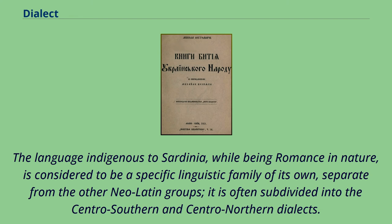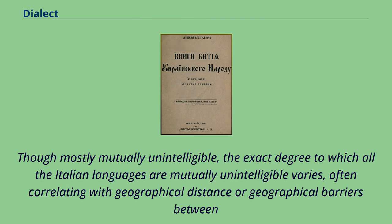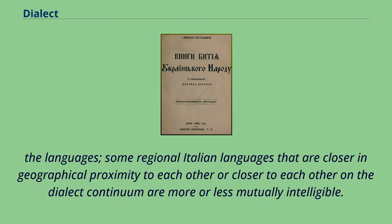The language indigenous to Sardinia, while being Romance in nature, is considered to be a specific linguistic family of its own, separate from the other Neo-Latin groups, and is often subdivided into the Centro-Southern and Centro-Northern dialects. Though mostly mutually unintelligible, the exact degree to which all the Italian languages are mutually unintelligible varies, often correlating with geographical distance or geographical barriers between them. Some regional Italian languages that are closer in geographical proximity or on the dialect continuum are more or less mutually intelligible.